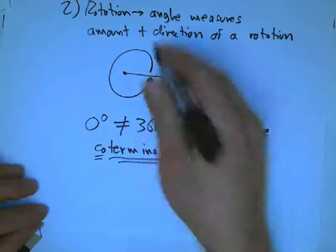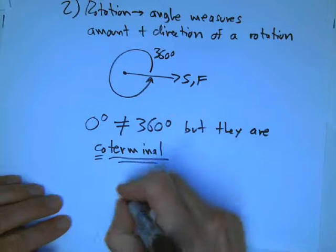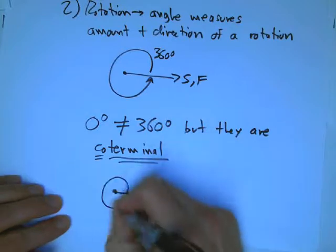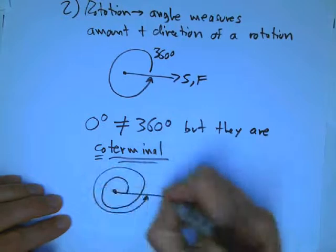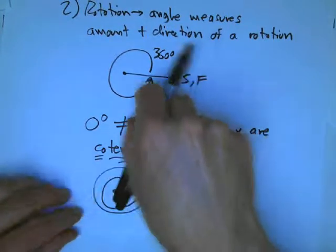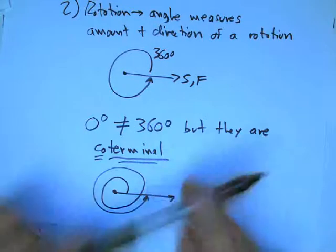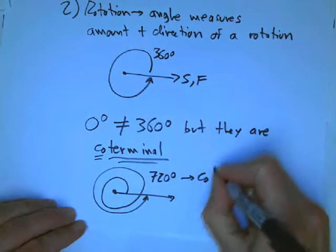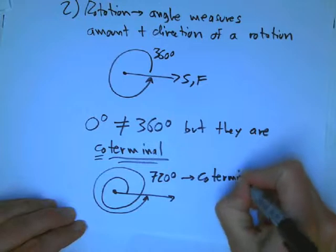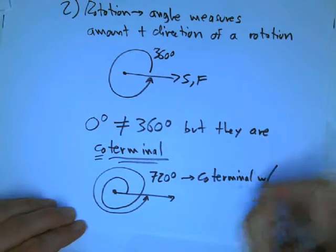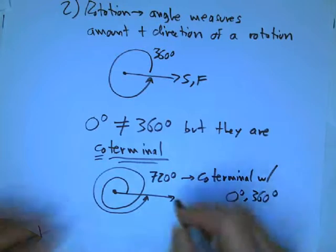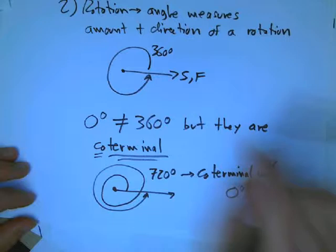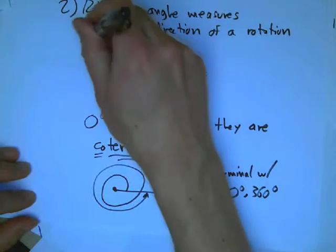So I'll show you some more examples of coterminal angles in a minute. We could go farther than 360. We could do a 720. We could start out, and we could rotate around once, and then twice. And this thing is going to go around, and around twice, and 720 degrees. Another, that's another one that's coterminal with zero, and with 360. And any multiple of 360 is going to go, going to be like that.